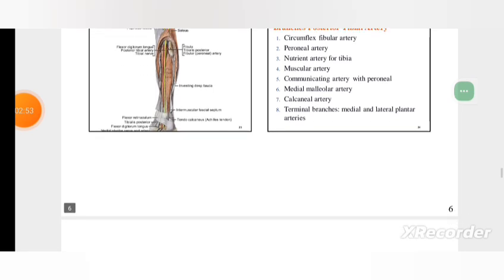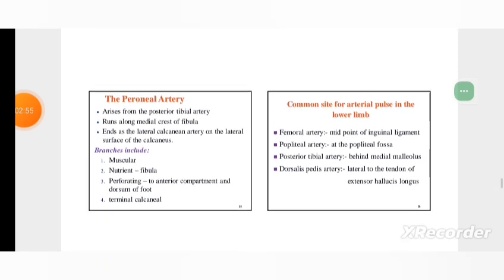The peroneal artery and its distributions arises from the posterior tibial artery, runs along medial crest of fibula, ends as the lateral calcanean artery on the lateral surface of the calcaneus. Branches: muscular, nutrient fibula, perforating to anterior compartment and dorsum of foot, terminal calcaneus.